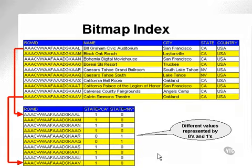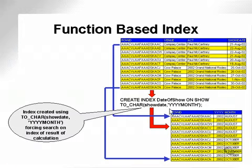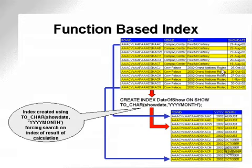However, bitmap indexes were originally created for data warehousing — read-only structures. Do not use them in OLTP databases, because you will have severe performance problems. They overflow a lot and are not updatable with any acceptable speed. A function-based index can be useful. For example, I created an index called date_of_show on show, applying a function to show_date which produces a value like '2002 August'. A where clause using this index searches for '2002 August' rather than a full date or Julian value.